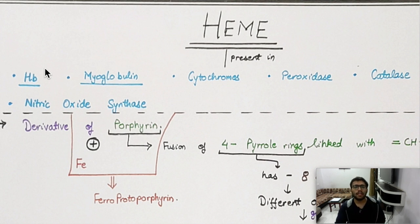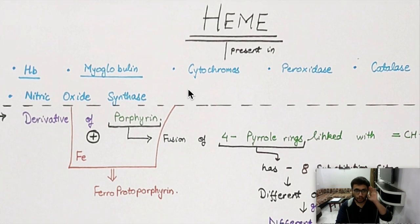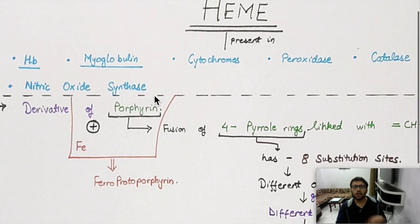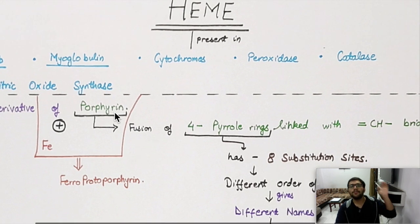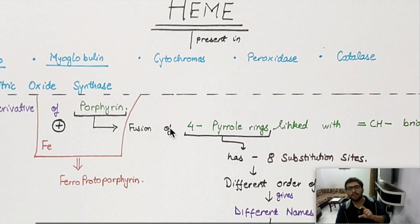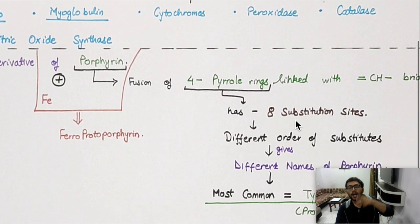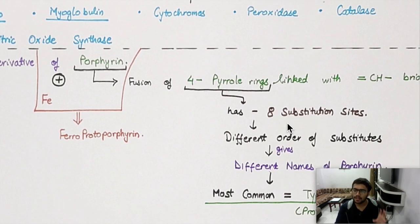Heme is a derivative of porphyrin. Now suppose you are entirely blank and have not read this topic before — what is porphyrin? Porphyrin is made up of four pyrrole rings. These pyrrole rings have substitution sites. Let's dissect these things.